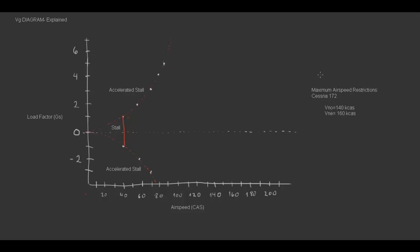Next, we'll insert the maximum airspeed restrictions. This example, a Cessna 172, has a VNO speed of 140 knots of calibrated airspeed, and this is the maximum structural operating speed. Also, we have the VNE, the never exceed speed at 160 knots of calibrated airspeed.